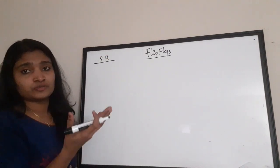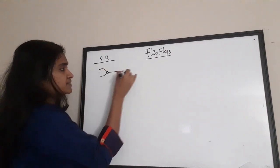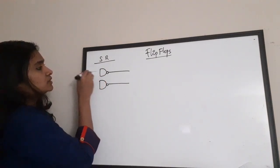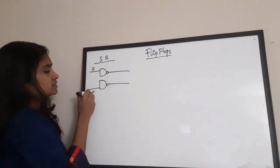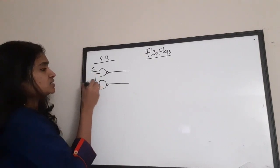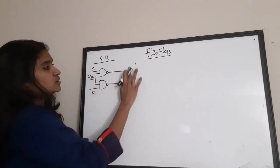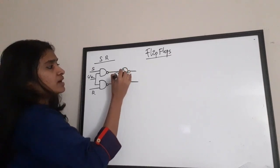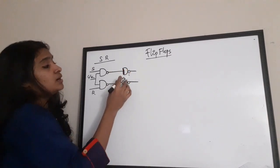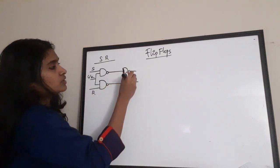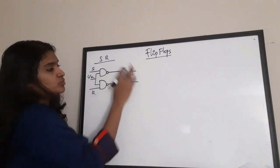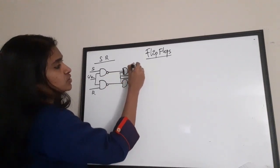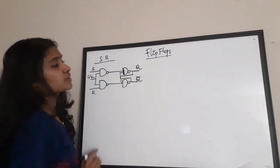First I am going to take the SR flip-flop and draw its circuit diagram using NAND gate realization. There are two NAND gates — the first input S goes to the first gate, and R goes to the second NAND gate. Connecting these two, I am going to give the clock signal. On the output side there are also two NAND gates, with outputs cross-connected. The output here is Q and here it is Q bar.